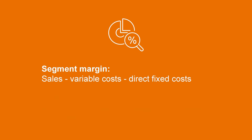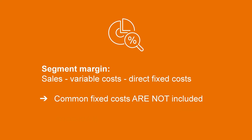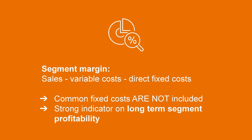The reason we separate direct fixed costs from common fixed costs is to enable the calculation of a segment margin. Segment margin is calculated by taking the sales from the individual segment, less the segment's variable costs, less the direct fixed costs for that segment. The common fixed costs are not included in this calculation. This segment margin is a strong indicator of the long-term profitability of a particular segment. In order for a company to continue operating an individual segment, it should at least be able to cover both its own variable and direct fixed costs.